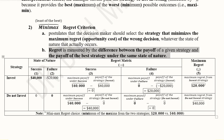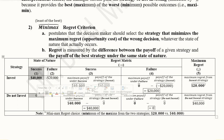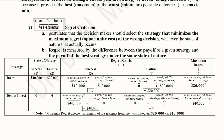Using the same familiar values: in the state of nature of success, $40,000 is the maximum value; in the state of nature of failure, zero is the maximum value. We extract these two maximum values and then subtract each strategy's payoff from them. So: $40,000 minus $40,000 for invest under success, and $40,000 minus $0 for do-not-invest under success.